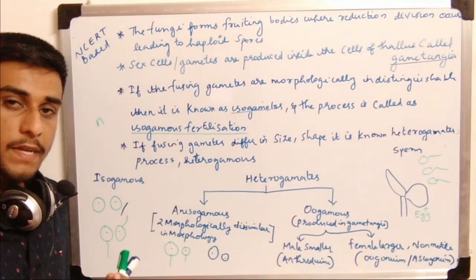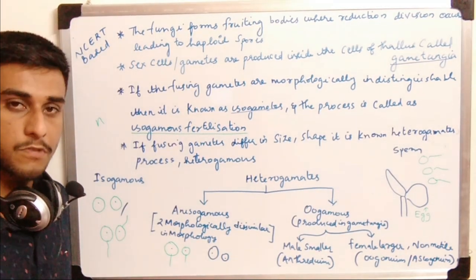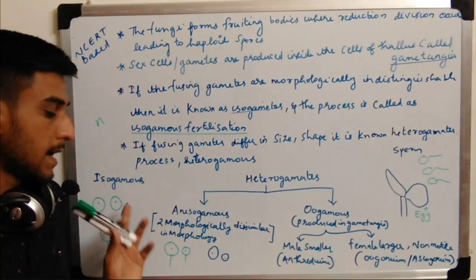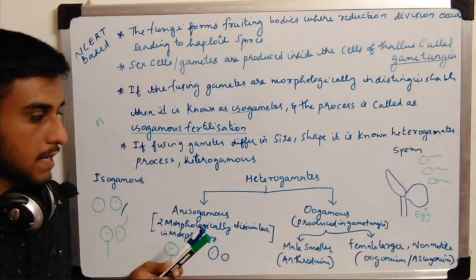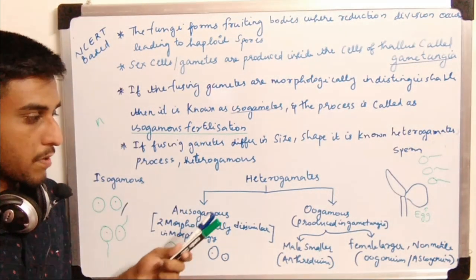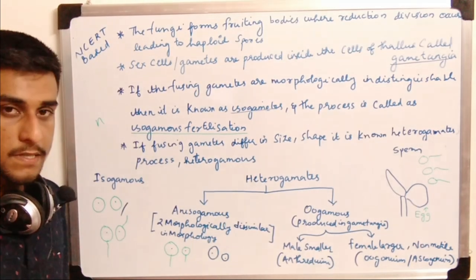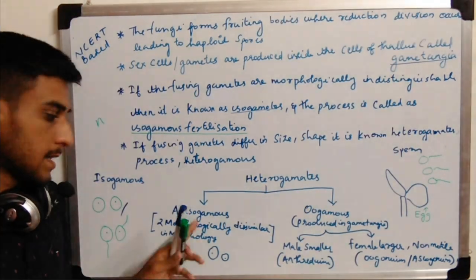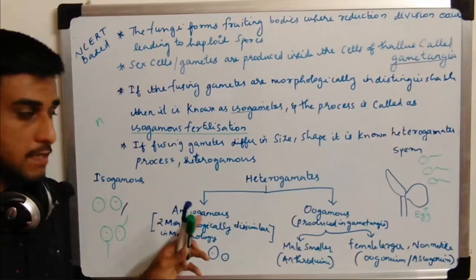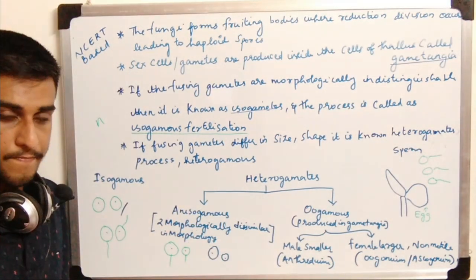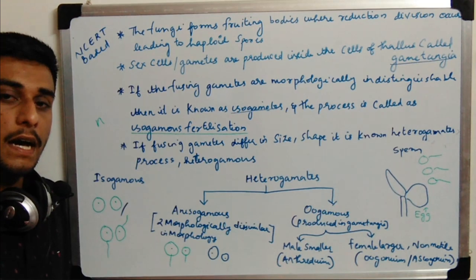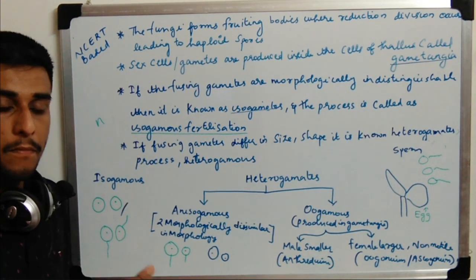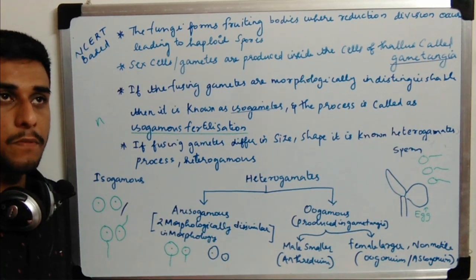Heterogametes can be of two types: first is anisogamous, and the second division is the oogamous type. In anisogamous fertilization, the fusing gametes differ in their morphology — either in their shape, size, etc.